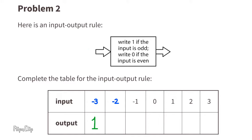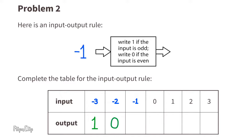When the input is negative two, that's even, so we're going to write zero for the output. When the input is negative one, that's odd — I'll write one for the output. When the input is zero, the output is zero.